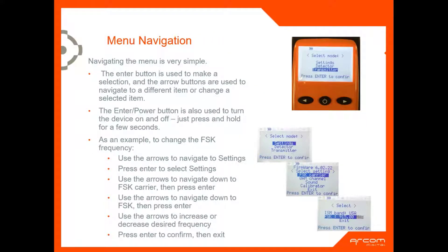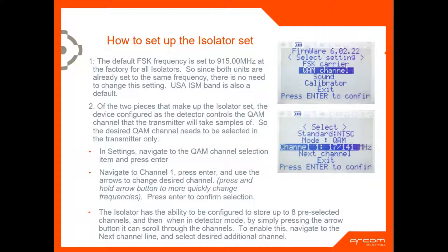For menu navigation: when we turn the unit on, we call this the home screen in the upper right-hand corner. In settings, this is where we go to set up the FSK carrier. We're going to set up the same FSK frequency for each device. Then we set up the QAM channels — same channels for each device. When you scroll down to QAM channel and hit enter, it's going to ask the mode, and it's going to be QAM.